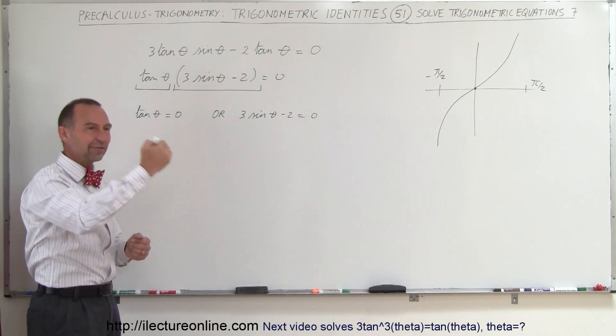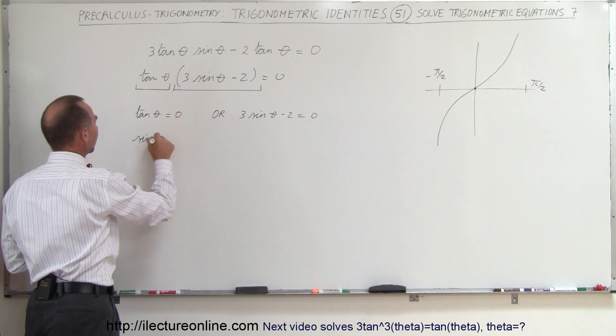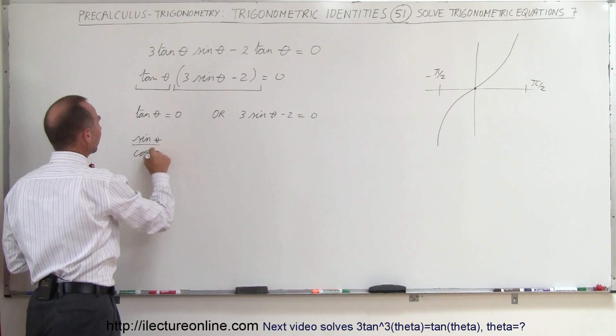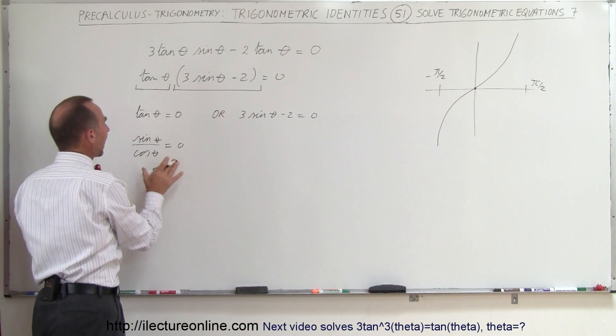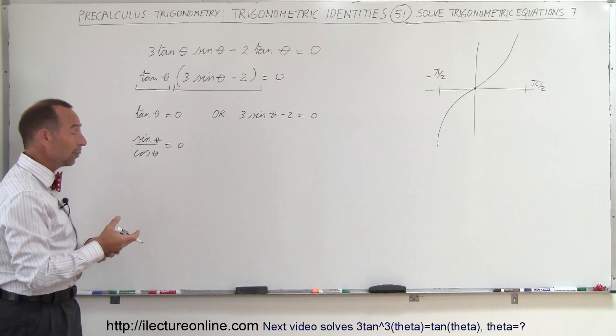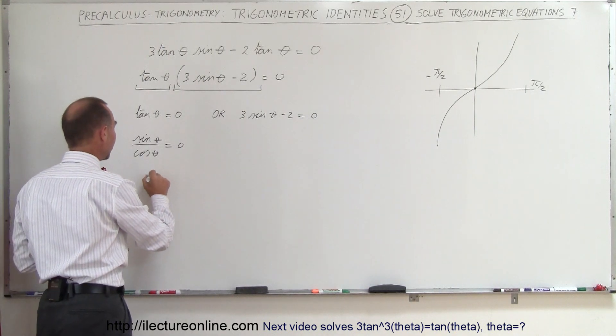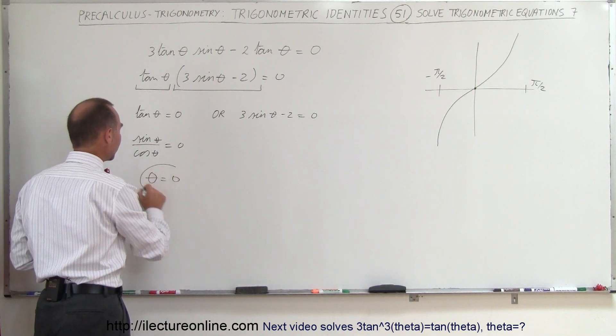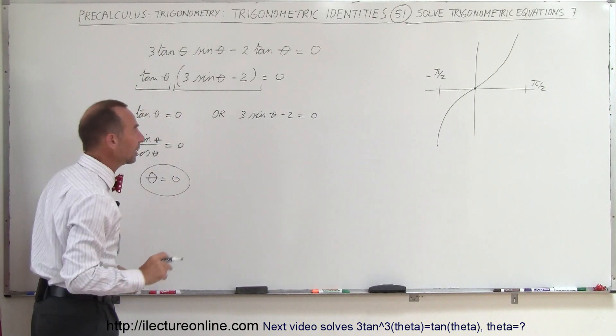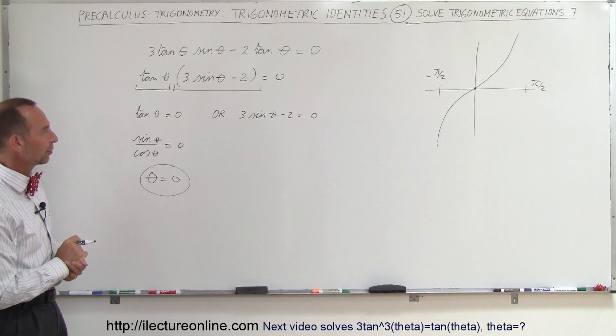Remember that the tangent is the sine divided by the cosine. So you can think of it this way: the sine of theta divided by the cosine of theta equals zero. That can only happen if the numerator is zero, which means the numerator, the sine, can be zero when theta is zero, just like for the tangent of theta is equal to zero. So the conclusion is theta equals zero is the only place where the tangent of theta can equal zero, of course between minus pi over two and positive pi over two.